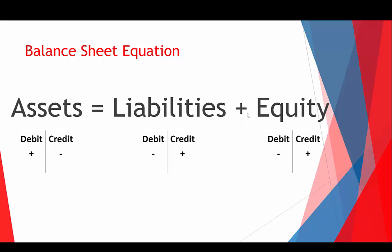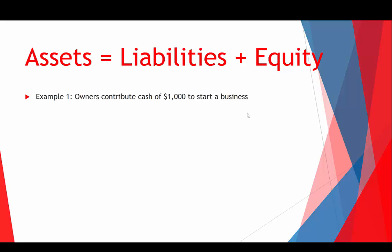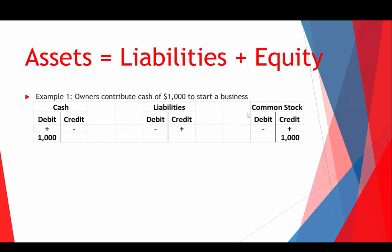We're going to come back to this equation time after time. Example one: owners contribute $1,000 of cash to start a business. Cash is going to go up by $1,000. Liabilities don't apply here because owners are just contributing it. Since it's from an owner, it's going to be common stock, and we're going to credit that for $1,000. The key takeaway is that assets increased by $1,000 and the combination of liabilities and equity also increased by $1,000.